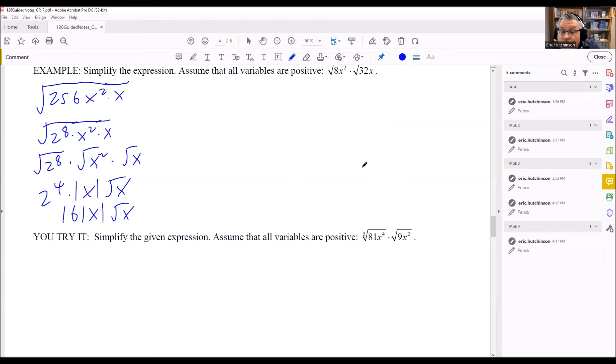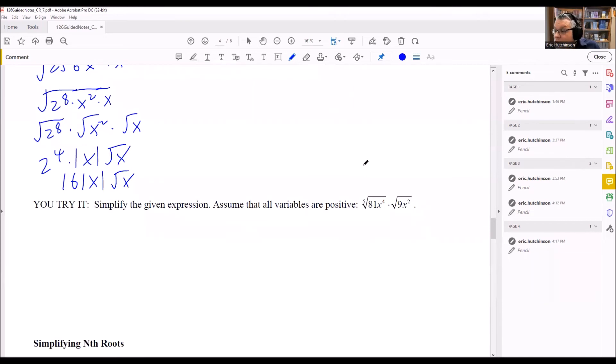Okay, and we'll do one more here. All right, so this one, we have two different indexes here. So we can't just multiply those together like before, because the product principle only works if the index is the same. So this one, we can't really do the same way. So instead, what we'll do is we'll try and break each of these down.